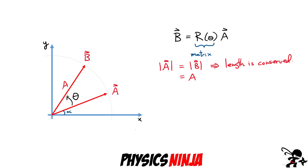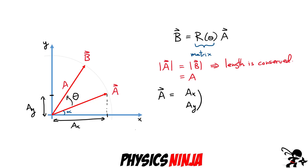Now we break each vector down into components. Both vectors have an x-component — the x-component of vector A is AX — and both have a vertical component AY. I can write vector A as (AX, AY) and similarly vector B as (BX, BY). My goal is to find the rotation matrix that links the components of B to the components of A. Let's go to the next page and do a bit more math to link them together.